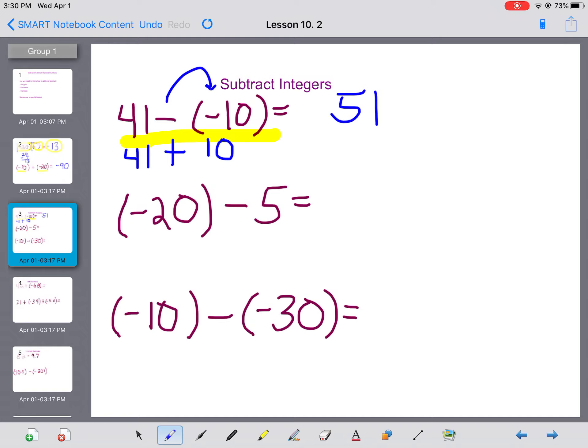Again, it's sort of like a double negative. Subtracting a negative number is the same as adding a positive number. Now I have negative 20 and I take away five. Again, same thing.